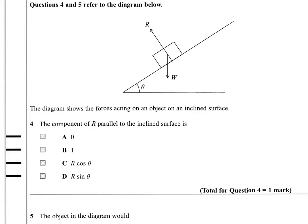So we're told that questions four and five refer to this diagram. The diagram shows the forces acting on an object on an inclined surface. The component of R parallel to the inclined surface is going to be one of these values. And we have to find out what it is. Well, crucially here, R is at 90 degrees to that surface. So it will have no component along the inclined surface.